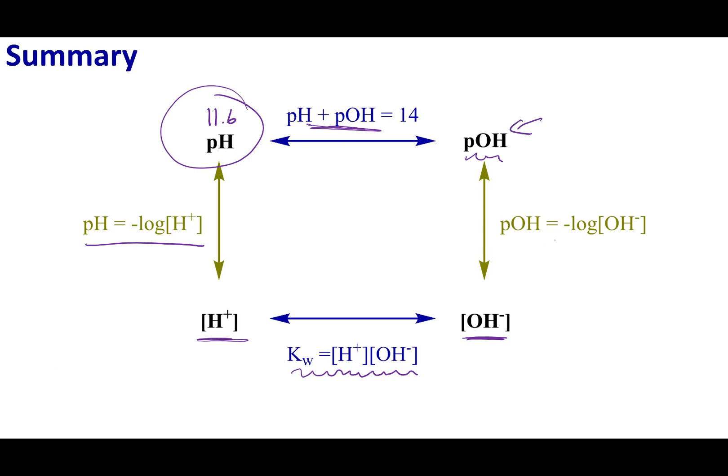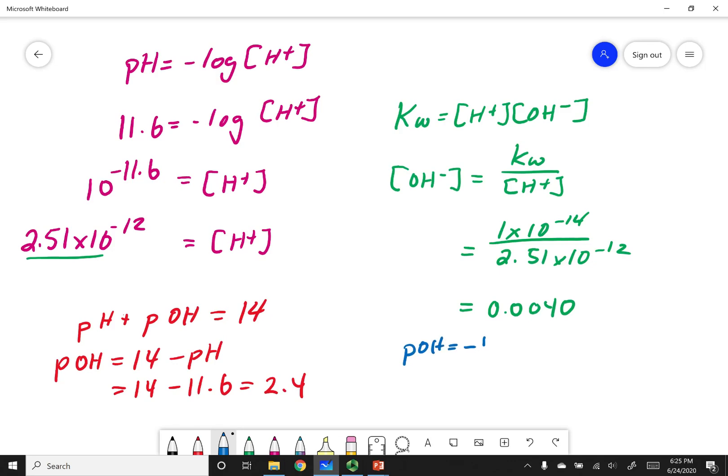Now that I have my pOH, I can use this relationship to get to OH minus concentration. pOH equals the negative log of my OH minus concentration. So 2.4 equals the negative log of my OH minus concentration. Like I showed you before, you can take the antilog of negative 2.4. What you'll get is 0.0040. You'll notice that that is the same number we came up with before.